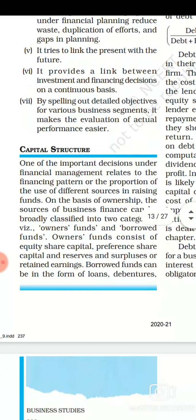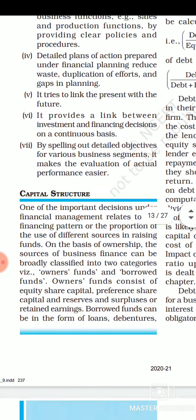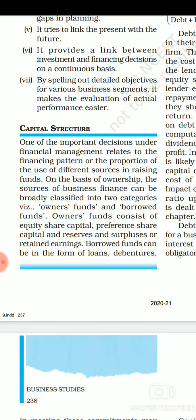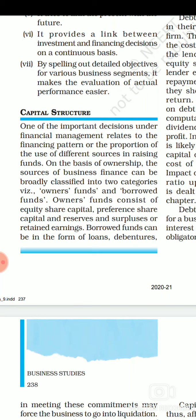Financial planning provides a link between investment and financing decisions on a continuous basis. Because through financial planning, we understand when we will require finance and in what quantity, so that all those things are available at the right time with the right quantity and investment can be done properly. By spelling out detailed objectives for various business segments, it makes evaluation of actual performance easier — comparing objectives with actual performance. In this way, financial planning helps a business enterprise know its financial report card.